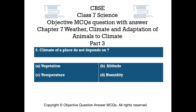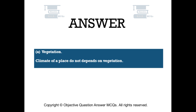Question number 5. Climate of a place does not depend on: Option A: Vegetation. Option B: Altitude. Option C: Temperature. Option D: Humidity. The right answer is Option A — Vegetation. Climate of a place does not depend on vegetation.